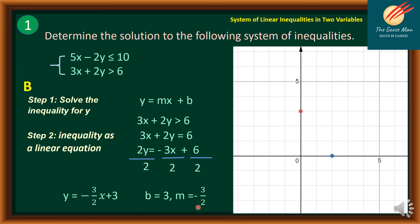On the Cartesian plane, the y-intercept is at (0, 3). With a slope of negative 3 over 2, we move 3 steps down and 2 right, giving us the coordinate (2, 0). We connect the two points with a dashed line because the inequality is strictly greater than.